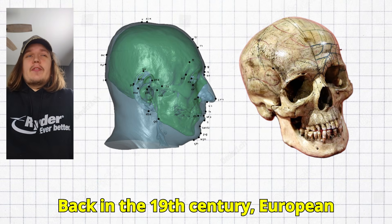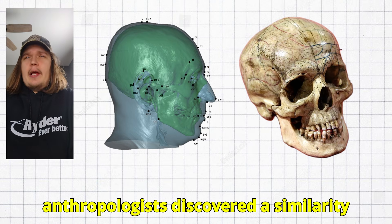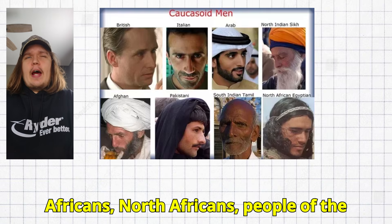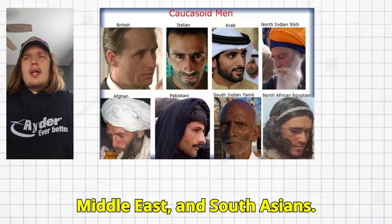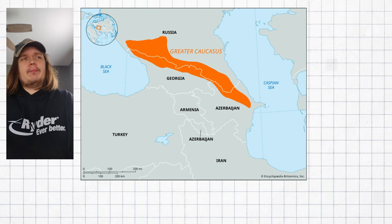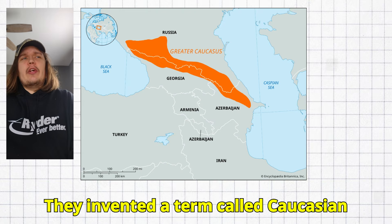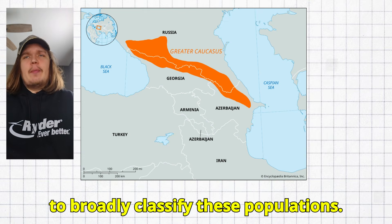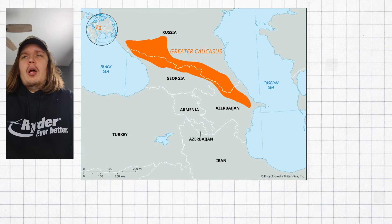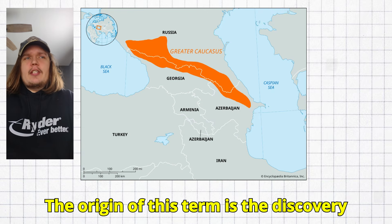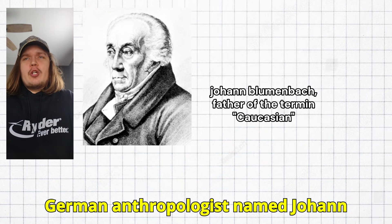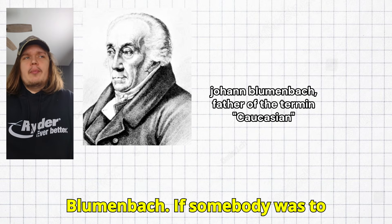Back in the 19th century, European anthropologists discovered a similarity between the skulls of Europeans, Horn Africans, North Africans, people of the Middle East, and South Asians. They invented a term called Caucasian to broadly classify these populations. The origin of this term is the discovery of a skull in the Caucasus Mountains by a German anthropologist named Johann Blumenbach.